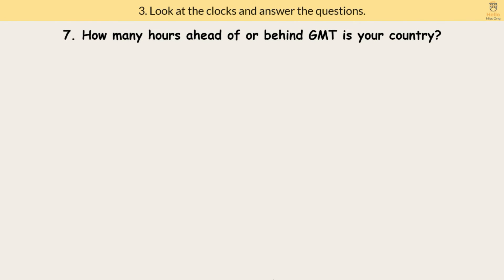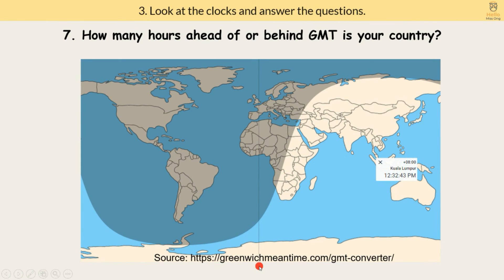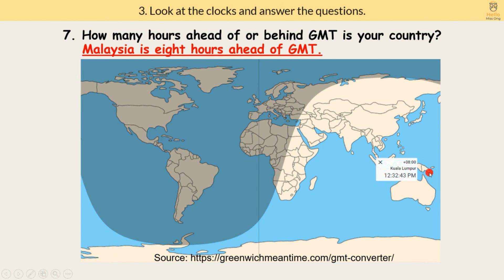Question 7: How many hours ahead of or behind GMT is your country? I strongly recommend you use this website — type in your country and you will know whether it is ahead of or behind GMT. For example, I type Kuala Lumpur, Malaysia, and the answer is plus 8, so Malaysia is 8 hours ahead of GMT. If you see a minus, that means your country is behind GMT. I'll put the link in the description box — click it and try it yourself.